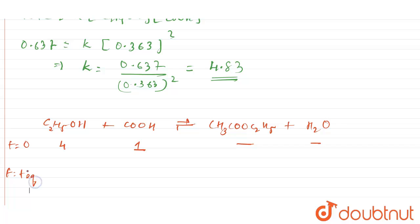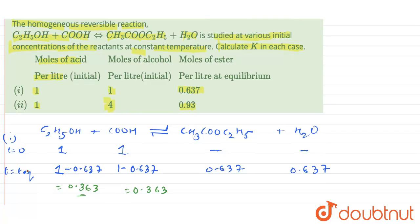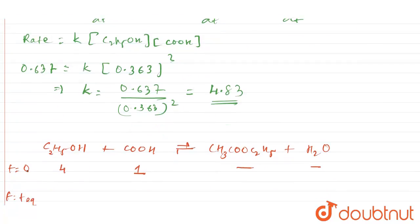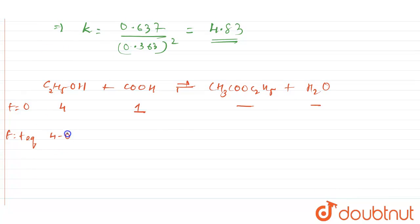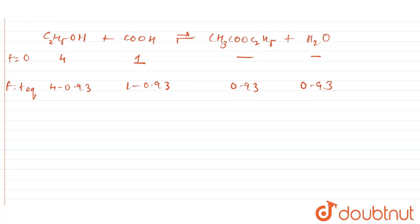So at T equals T equilibrium, the ester which is formed is 0.93. So for forming 0.93, we will subtract that. So 4 minus 0.93, 1 minus 0.93 will give 0.93 of ester and 0.93 of H2O.